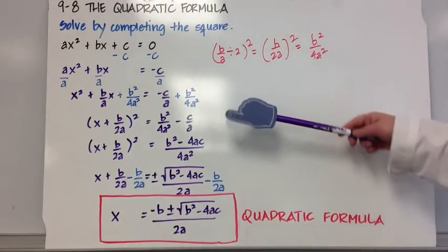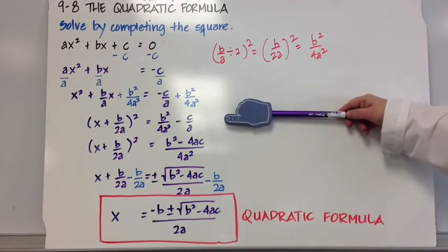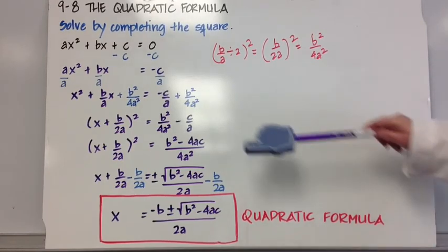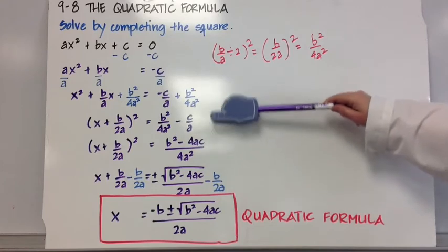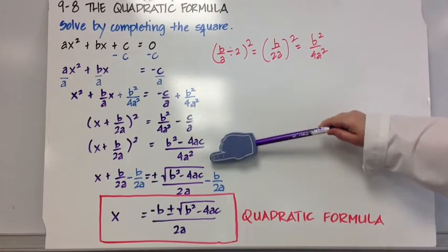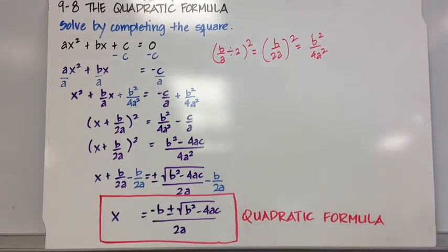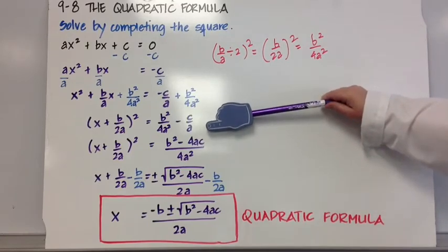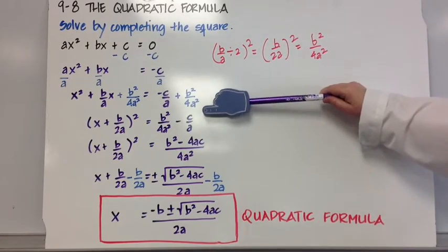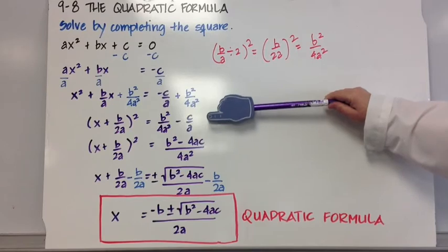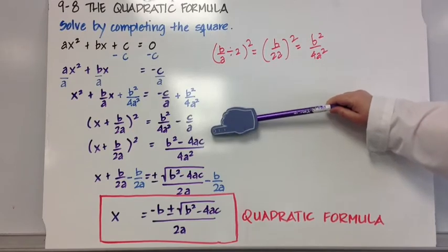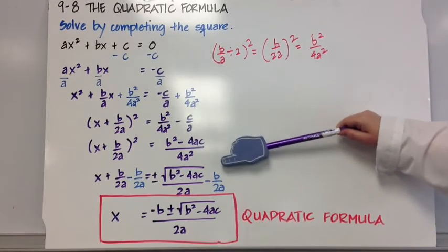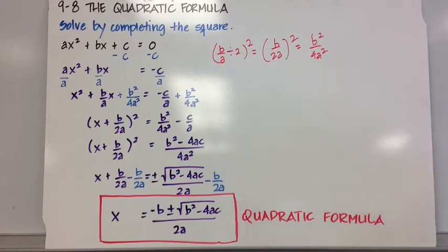So now we know that we want to take the square root of both sides. Well actually before we do that, I think I want to simplify this term by writing it over a common denominator. The common denominator would be 4a squared. So minus c over a would be the same as minus 4ac over 4a squared, which results in the right-hand side of b squared minus 4ac all over 4a squared. Just cleaning it up a little bit.